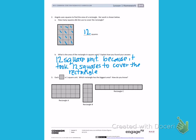Look at rectangle A. I can count that there are 1, 2, 3, 4, 5, 6, 7, 8, 9, 10, 11, 12, 13, 14, 15, 16, 17, 18 square units.